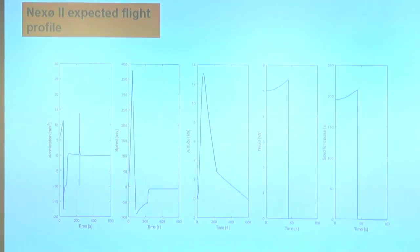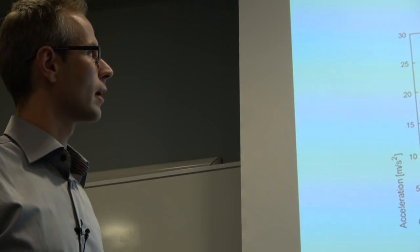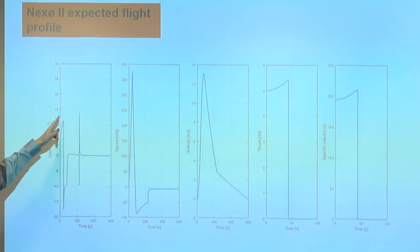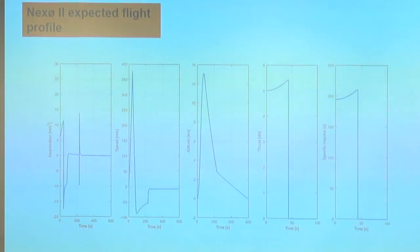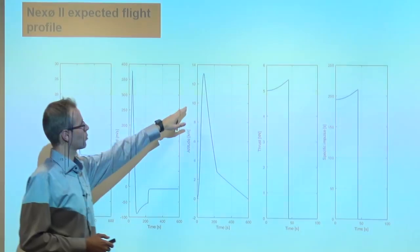So the expected flight profile. Nexo 2 is a heavy rocket as I said. Acceleration starts at about 6 meters per second squared, so 0.6 G, and then it increases to about 1.1 G. It's a heavy rocket, slow acceleration rocket. It accelerates like a Falcon 9 more or less. That should take about 45 seconds. Then it should reach max speed, something like 375 meters per second, slightly supersonic. Then it should coast up to apogee of about 13 kilometers.